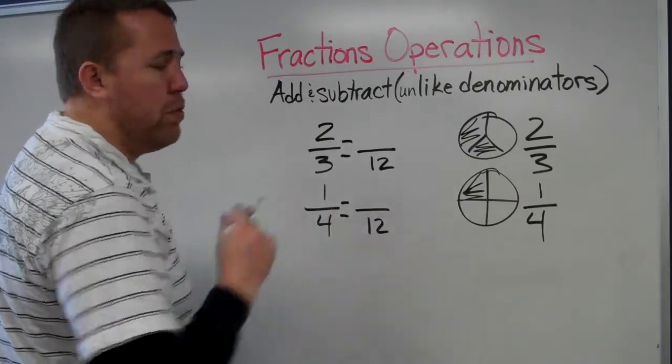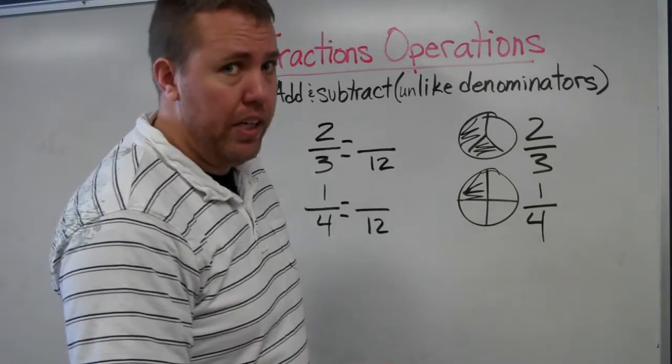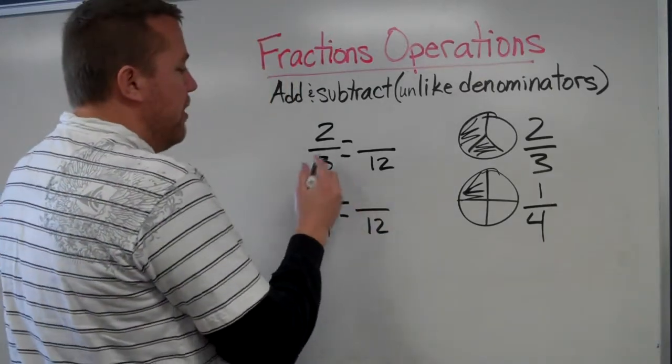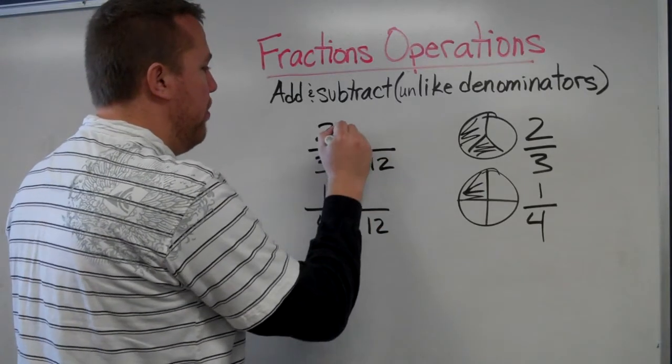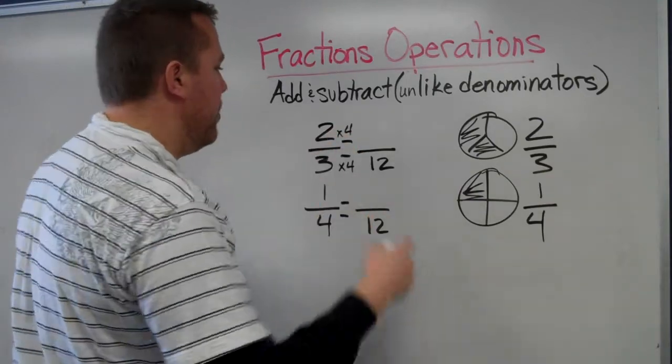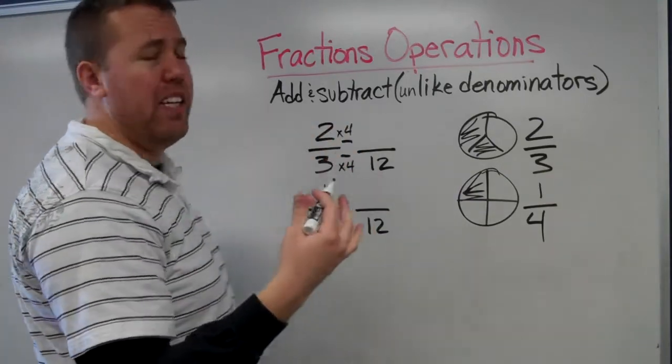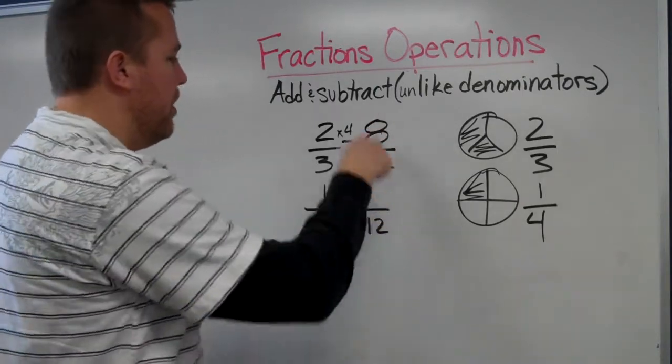Once we have the same denominator, we can start dealing with it. So two-thirds equals something twelfths. Times by four, times by four, because four over four equals one whole. I'm multiplying two-thirds by one whole to find an equivalent fraction with denominator twelve.